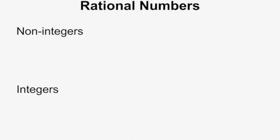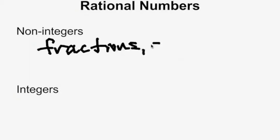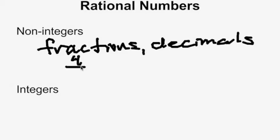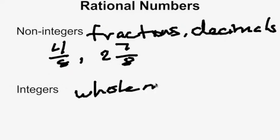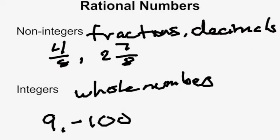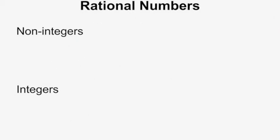The rational numbers break down further into non-integers and integers. Non-integers are your fractions and decimals, which are essentially the same thing — numbers such as 4 fifths and 2 and 7 eighths. Integers, however, are the whole numbers and their opposites, such as 9 and negative 100. Integers do not include fractions or decimals.